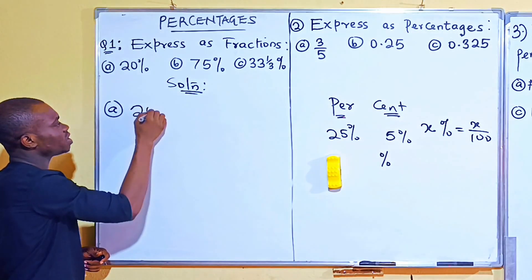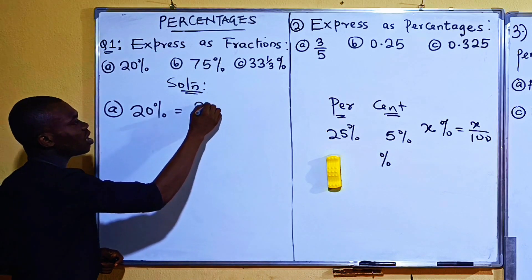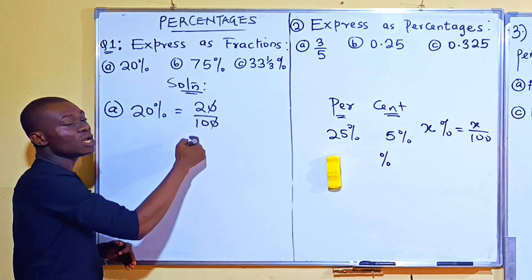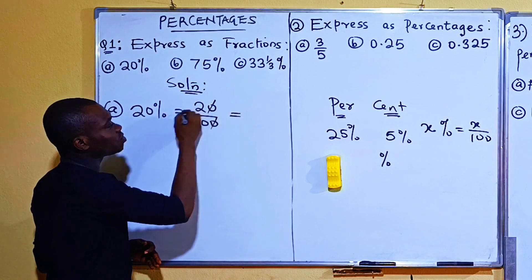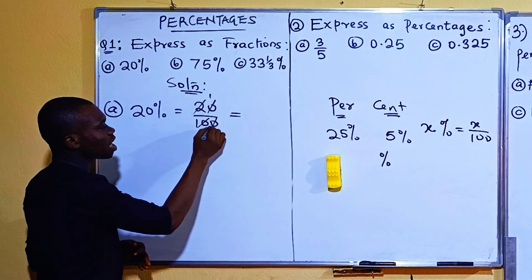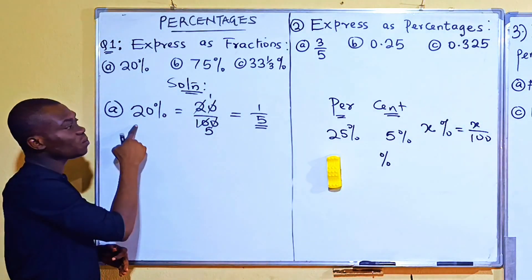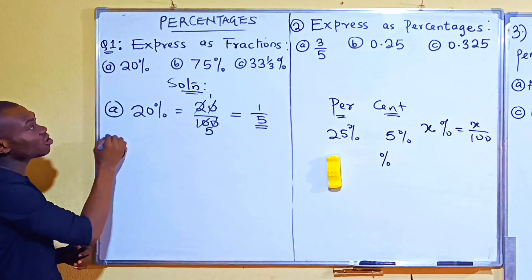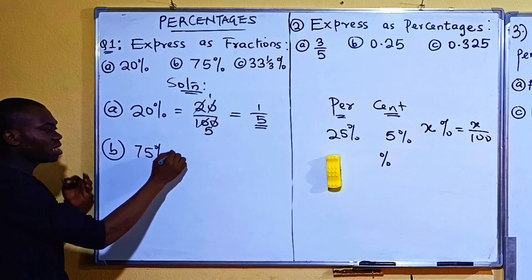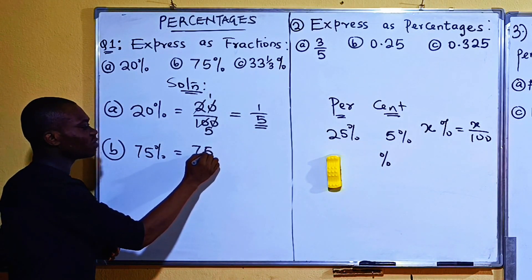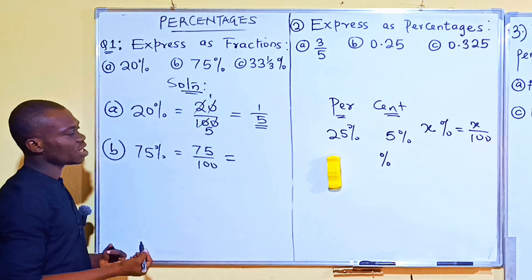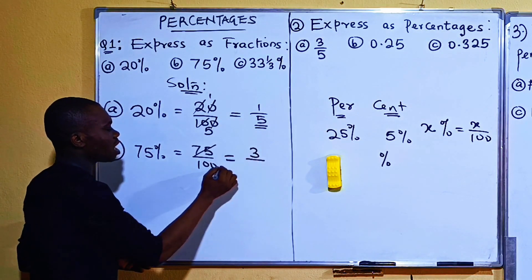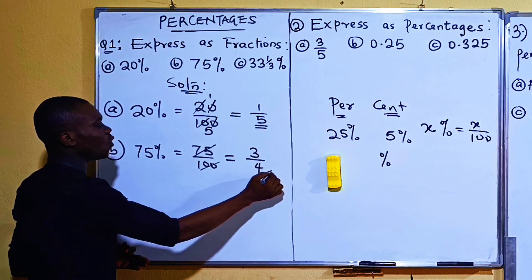So for the first one, 20% simply means 20 out of 100, that is 20 over 100. If we reduce this to lowest terms: 2 goes into 20 giving 10, and 2 goes into 100 giving 50 — actually dividing both by 20 gives us 1 over 5. So 20% is the same as one fifth. The second one is 75%, which is 75 over 100. The common factor is 25: 25 into 75 is 3 and 25 into 100 is 4, giving us three quarters.